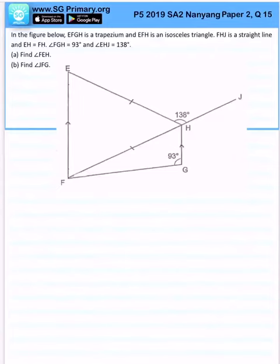Now in the figure below, EFGH is a trapezium and EFH is an isosceles triangle. FHJ is a straight line and EG is equal to FH.